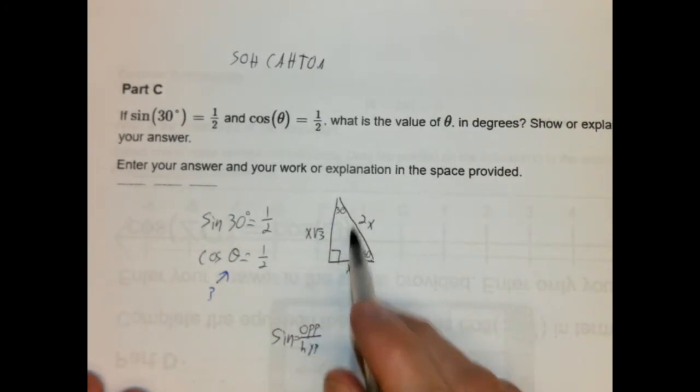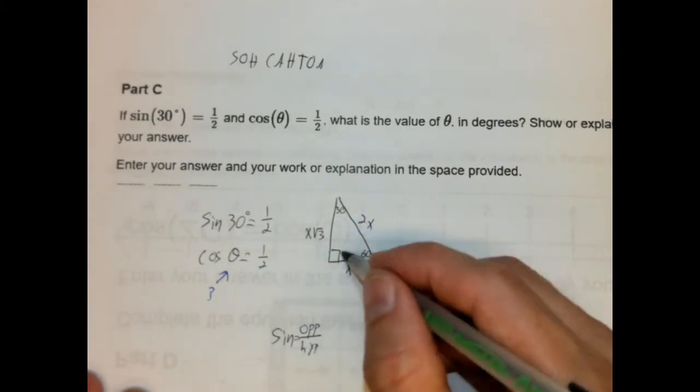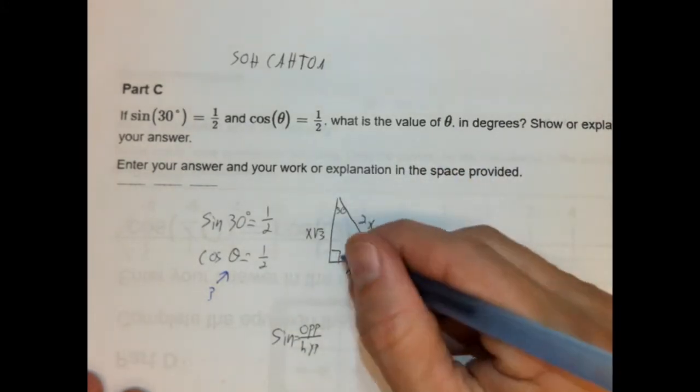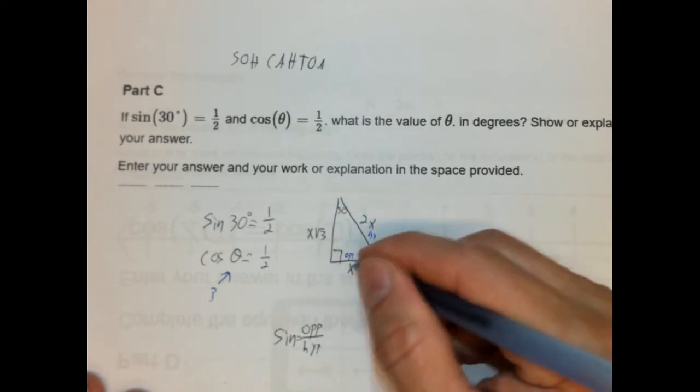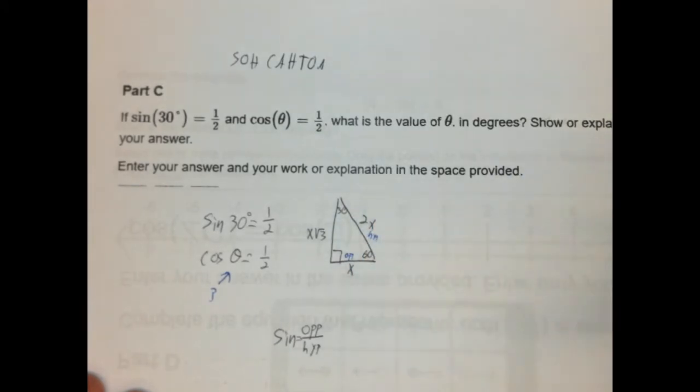All right. So, sine of 30 degrees is 1 half. So, sine is opposite over hypotenuse. Oh, that's what I'm going to zoom in. You can't see everything. Okay. So, that's our trigonometric ratio. Well, yeah. That makes sense because it's a special right triangle, x over 2x. So, this is our opposite, right? It's our opposite from 30. And this is our hypotenuse. So, yeah. This is 1 to 2 ratio. Okay. Fair enough.